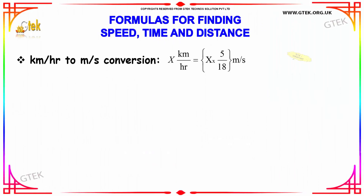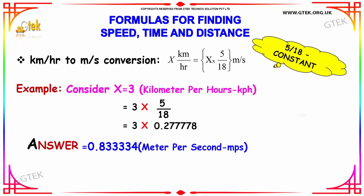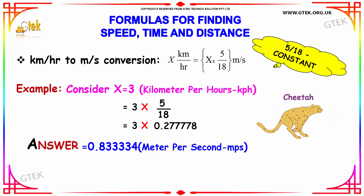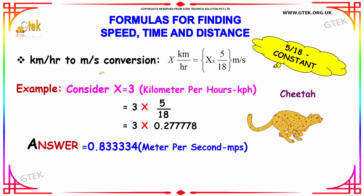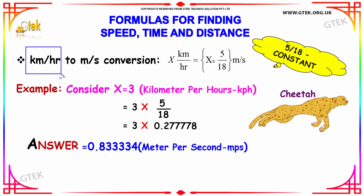If we talk about the formula to find speed, time and distance — first thing: if you have been given kilometer per hour, in case of converting into meter per second, you need to convert it by multiplying by 5 by 18 to get meter per second.